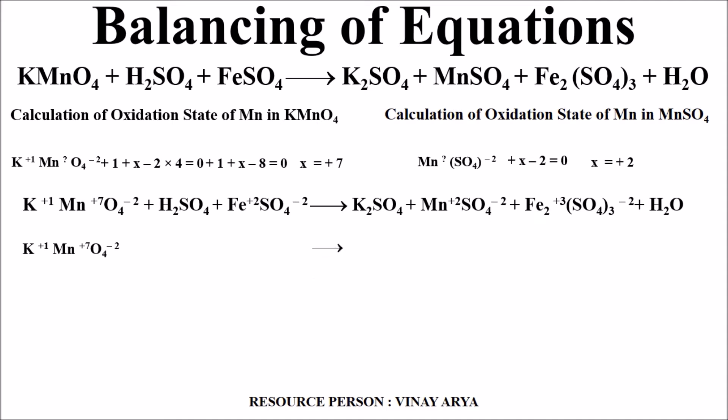Now, KMnO4 is converted into MnSO4. Henceforth, see the procedure how we are moving. First of all, what we are doing is we are calculating the number of atoms on both the sides. In reactant and in product side, we are having MnSO4 to be 1 ion but potassium is not in the product side. So what we have done is we have taken potassium sulfate K2SO4.